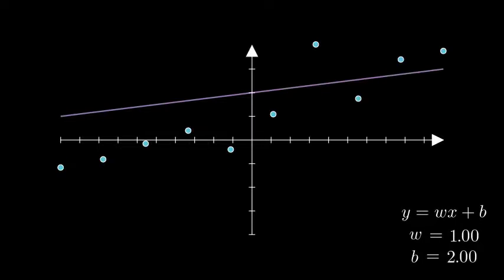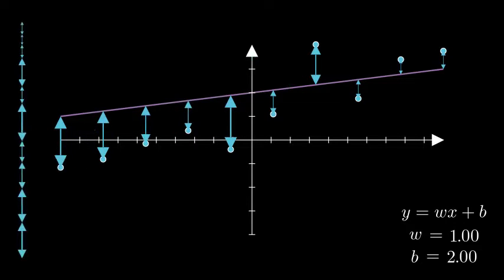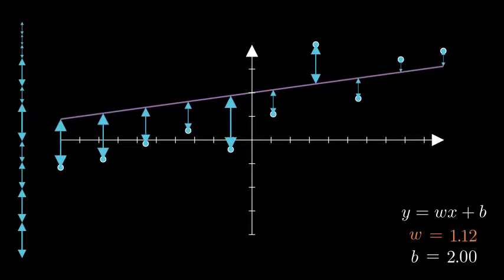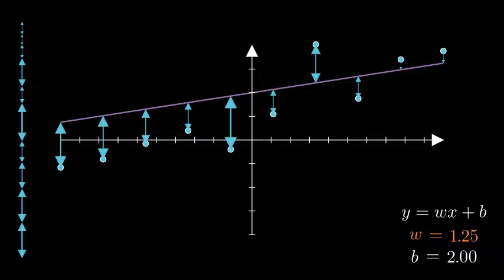If we have some line, and we want to measure how well it fits the observed points, we can simply calculate the perpendicular distances from each point to the line. The sum of these distances then tells us, on average, how well the line fits to the points. Now that we can measure the fit of a line, we can try to improve our line's fit by changing its parameters. If we increase the value of w by a small amount, say 0.25, then we get this new line, and we can again measure the fit of the new line and compare it to the old one. In this case, the new line has a smaller sum of distances, and so it's a better fit.